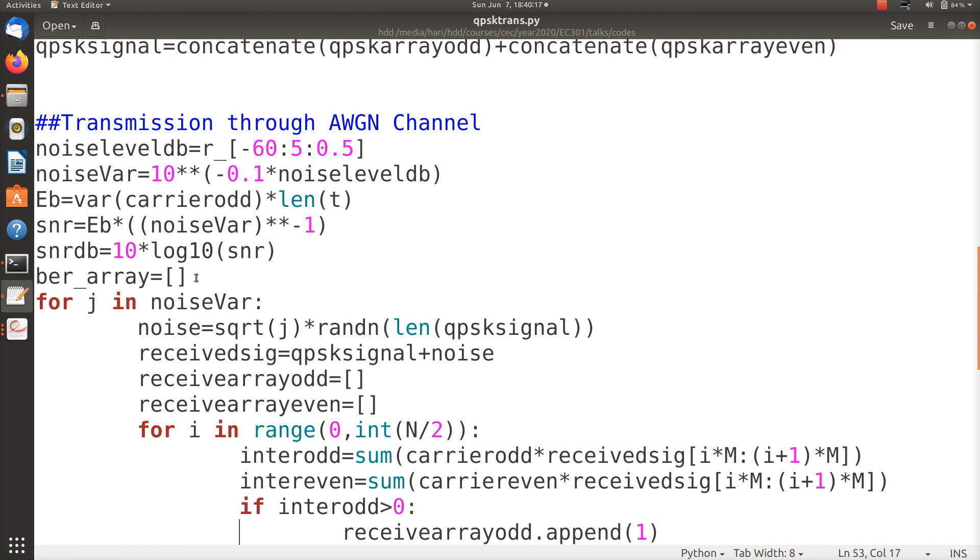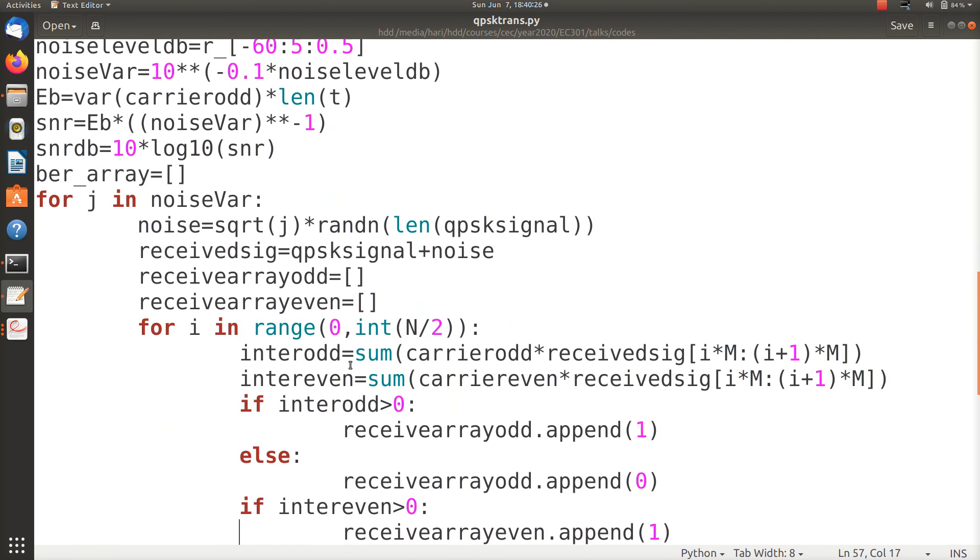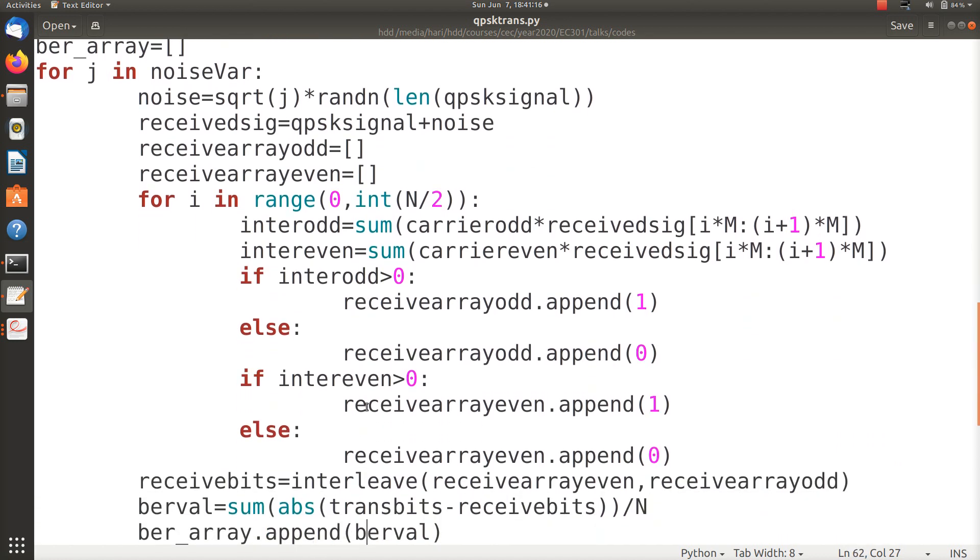Now I have to receive these bits for different noise variances, so I initiate a blank BER array. For various noise variances, here I make a receiver where the product is taken - the odd carrier is multiplied by the received bits during one bit interval. Then instead of the integration I took a sum because these are all discrete values, it doesn't matter much. Likewise I computed the intermediate value for the even one. These are the values that go into the decision device. Here the even carrier is multiplied by the received carrier.